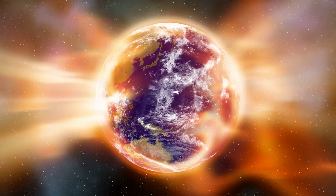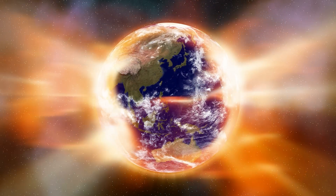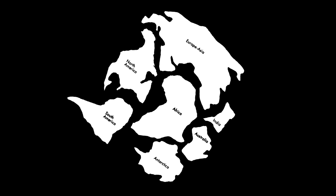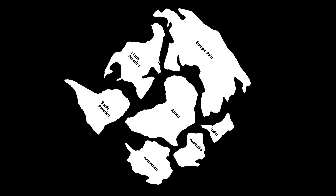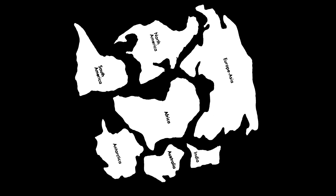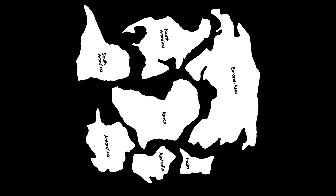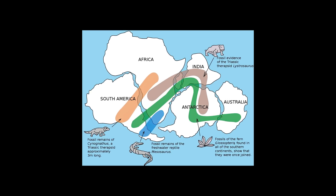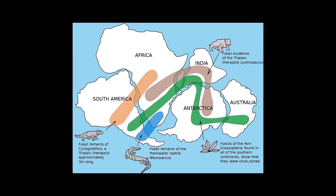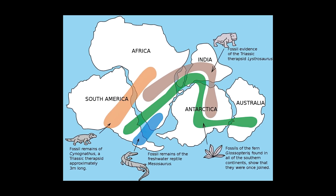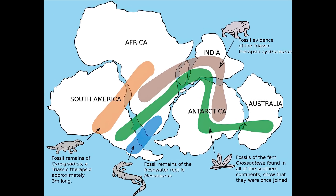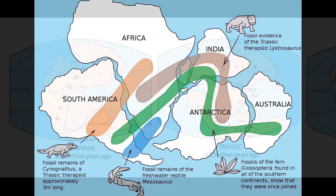So how do we know that Pangaea existed and that the continents moved? Well, we have a lot of evidence to support this theory. For example, if you look at a map, you can see that some continents look like they fit together, like South America and Africa. And if you look closer, you can find similar fossils and rocks on these continents, which means that they were once connected.